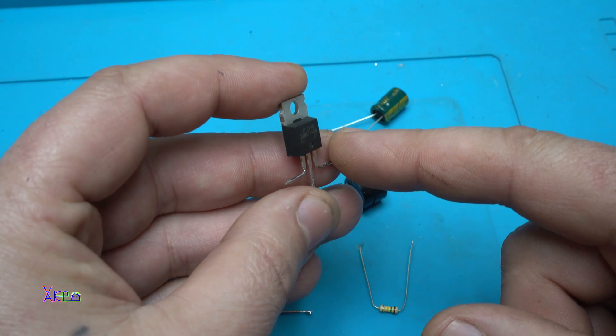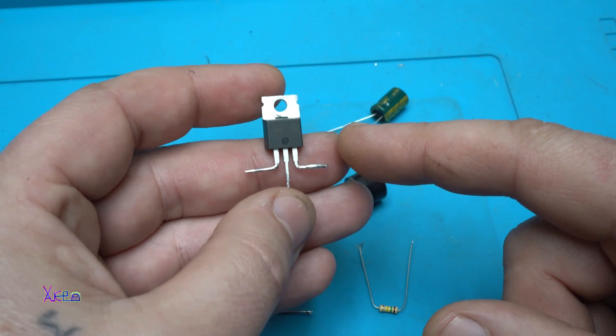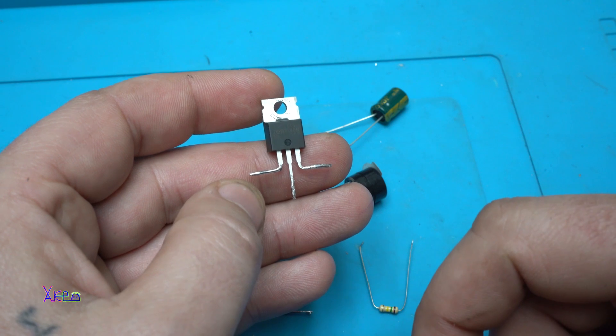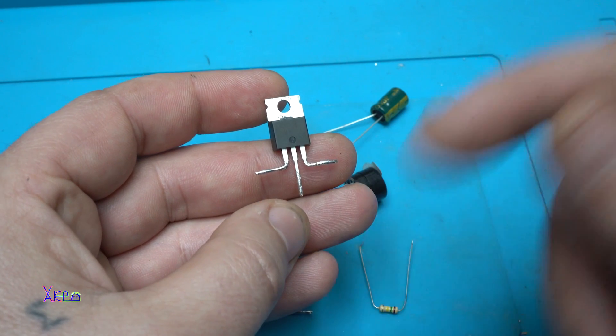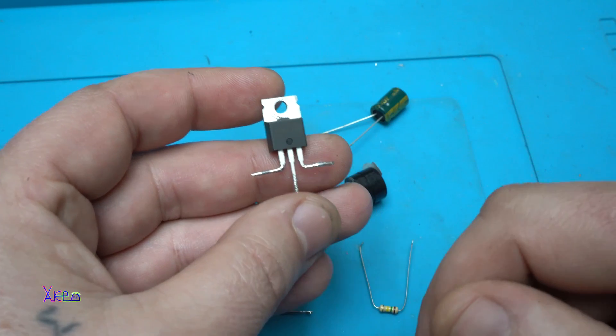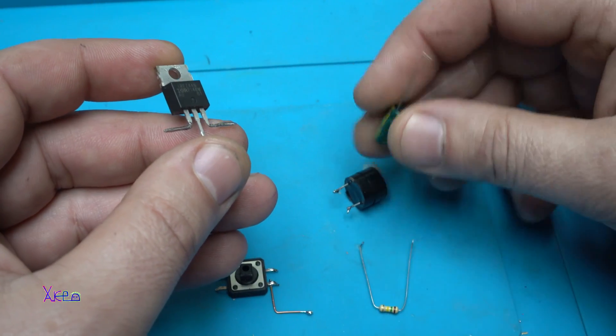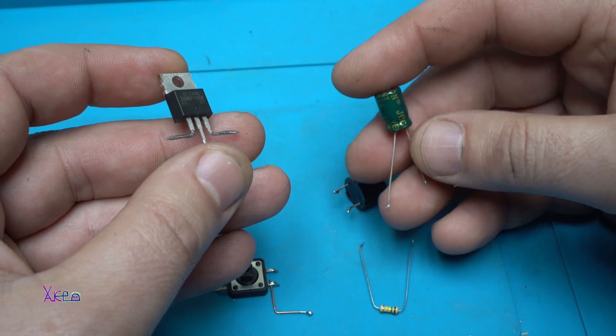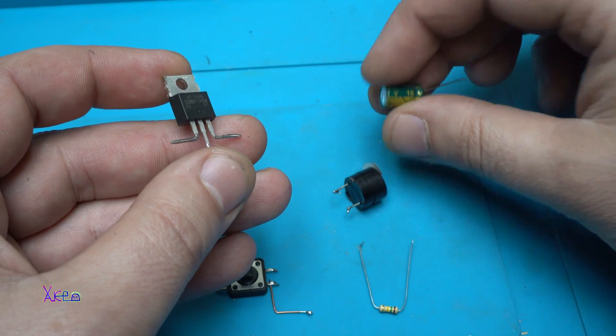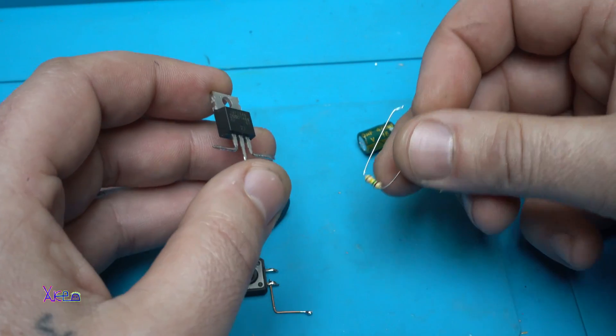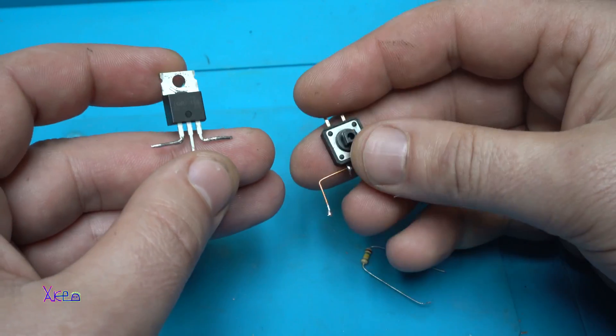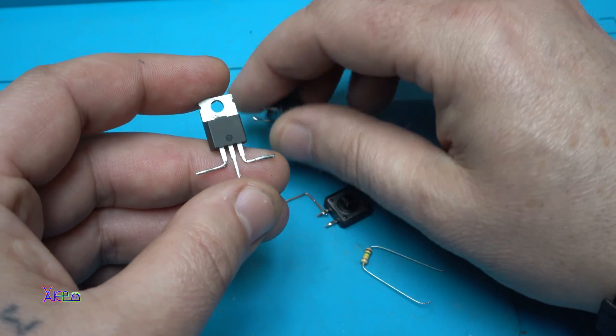And today, using this MOSFET and one electrolytic capacitor of 470 microfarads, one buzzer, one resistor 150 kilo-ohms, and one tact switch, I'm going to show you how you can make a very simple timer. Yes, a timer. Let's build the circuit now.